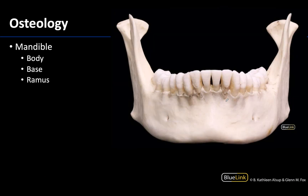Moving away from the cranium to the other component of the skull is the mandible, often colloquially referred to as the lower jaw. This will be a very important area in your career as it houses the lower or mandibular teeth, but let's focus on the basics. There are three major areas: the first is the horizontal portion referred to as the body; the base is basically the entire inferior region of the mandible; and the vertical portion is going to be the rami, or ramus if talking singular.